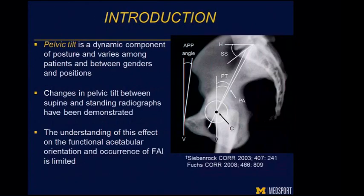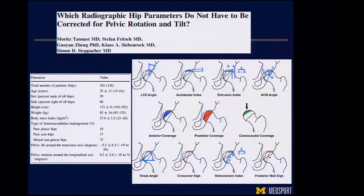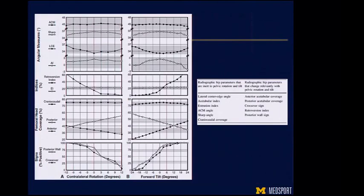Pelvic tilt, on the other hand, is a dynamic parameter that varies by position. Changes have been shown clearly between supine and standing positions. We set out to understand this effect on acetabular orientation as well as the occurrence of FAI. Tannast and colleagues have showed for some time how pelvic tilt and rotation affect the appearance of the acetabulum, and most markedly, those parameters of acetabular version.